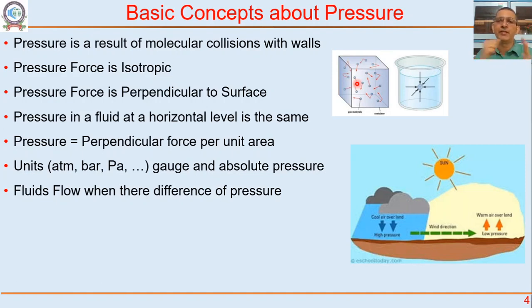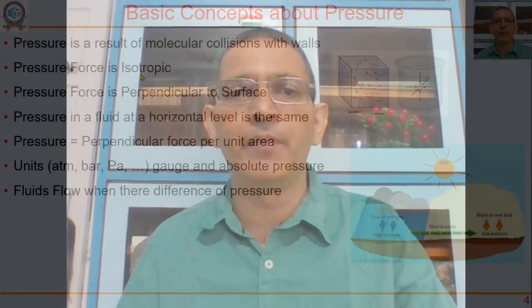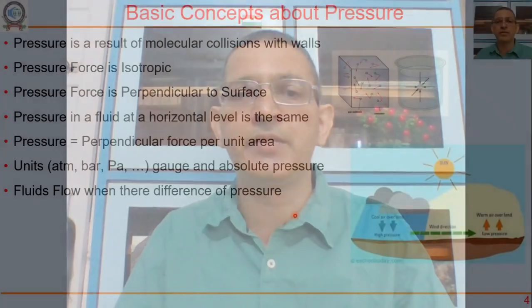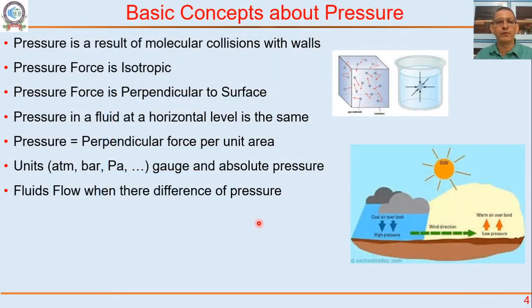Just to get you started, some basic concepts about pressure. Remember from 11th standard kinetic theory of gases — molecules of gas are point masses traveling at a random velocity, with RMS velocity dependent on temperature. When these molecules collide with the walls of a container, that is how you get pressure. Pressure force is isotropic, meaning it is the same in all directions. The pressure force at any particular point is the same in all directions.